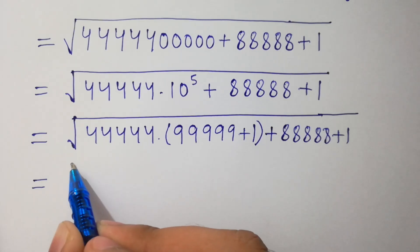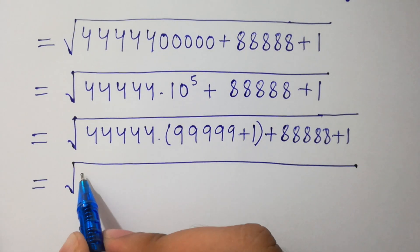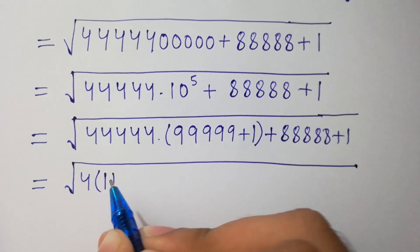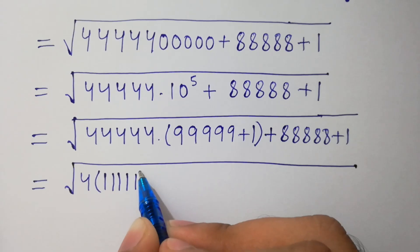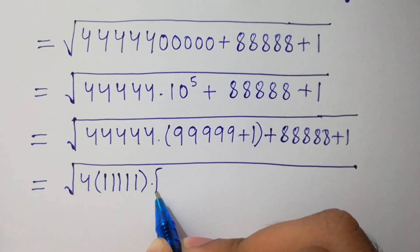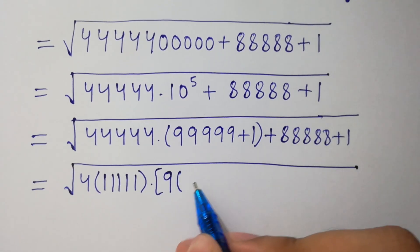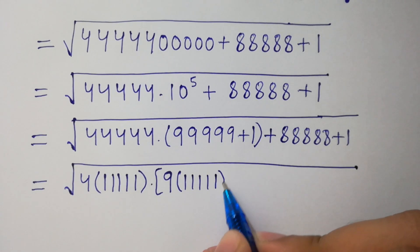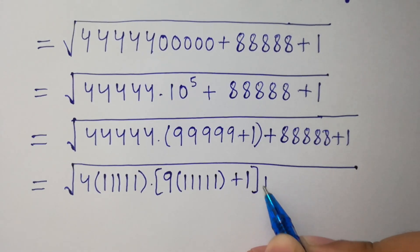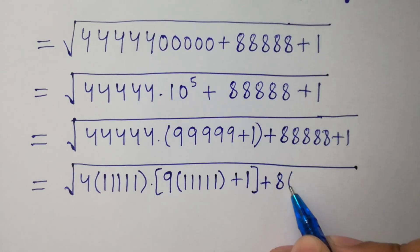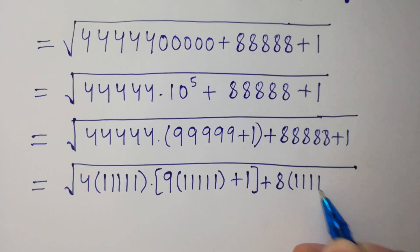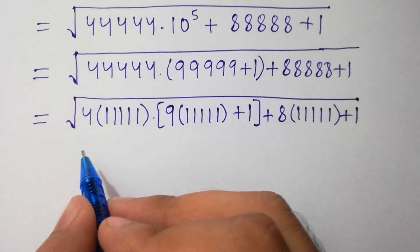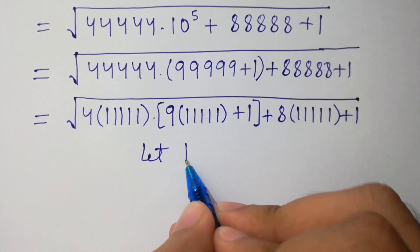We can factor the values here. We can take 4 common, giving us 5 times 1 × 10^5. Here we can take 9 common, giving 10^5 plus 1 as it is. And here we can take 8 common, giving 10^5 plus 1 as it is.